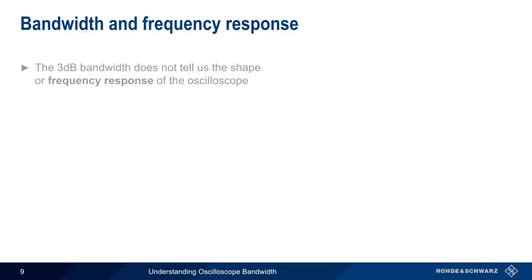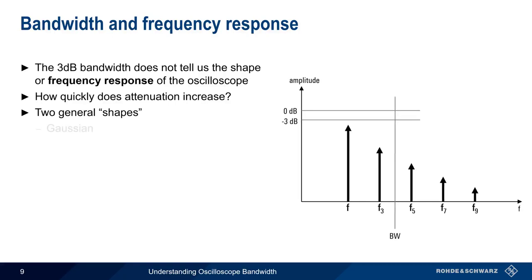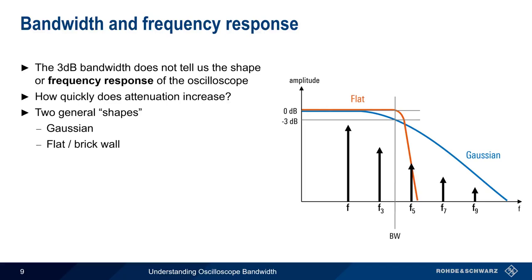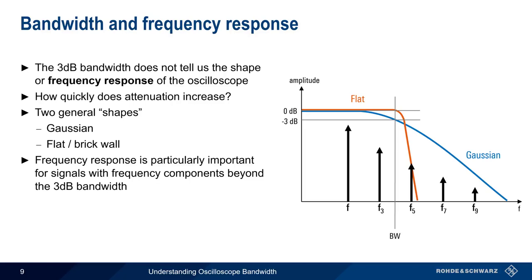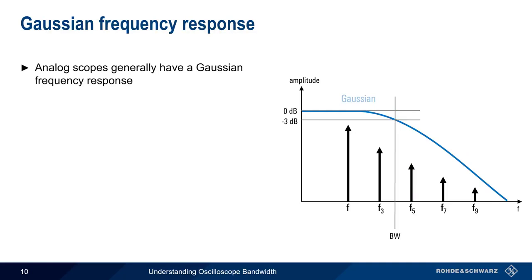Bandwidth is defined as the point where measured amplitude decreases by 3 dB, but this doesn't tell us anything about the shape or frequency response of the oscilloscope — in other words, how quickly does attenuation increase, both before and after we reach the bandwidth of the scope? Generally speaking, we can define the frequency response of oscilloscopes into two categories: Gaussian and a flat or brick wall response, although a scope's frequency response may fall somewhere between these two shapes. One reason why frequency response is important is that it affects signals whose frequency components fall beyond the 3 dB bandwidth. For example, the amount of ringing or overshoot on the signal will be different depending on the scope's frequency response, even if the bandwidth is the same. And as we'll see, the frequency response also affects the amount of noise in our measurements. Let's start by looking at the classical Gaussian frequency response.